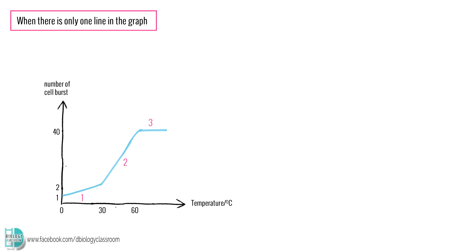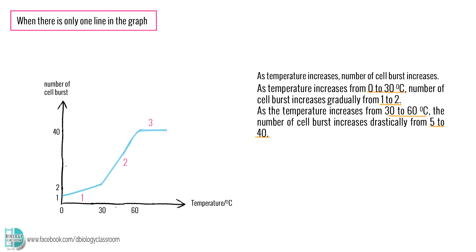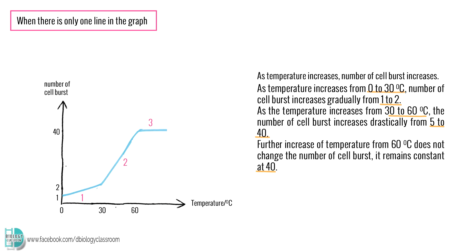For my example, the general statement will be: as temperature increases, number of cell bursts increases. Then the description will be: as temperature increases from 0 to 30 degrees Celsius, number of cell bursts increases gradually from 1 to 2. Note that you have to quote in the data from both axes. Next, as the temperature increases from 30 to 60 degrees Celsius, the number of cell bursts increases drastically from 5 to 40. Further increase of temperature from 60 degrees Celsius does not change the number of cell bursts — it remains constant at 40.